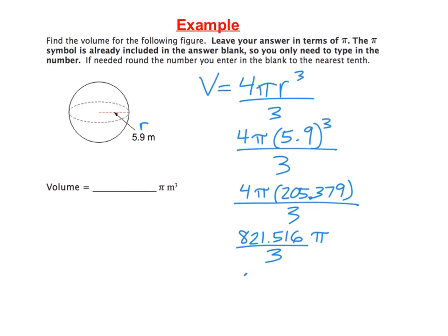And when I do that, I am getting 273.838. We're going to round to the nearest 10th. So that's 273.8 pi. It is again a volume and volume is always a unit cubed. So we have 273.8 pi meters cubed.